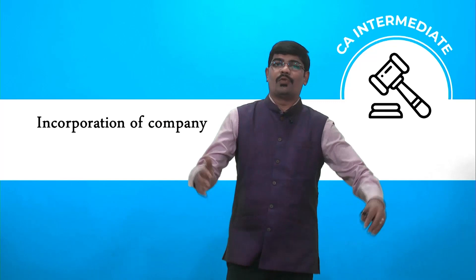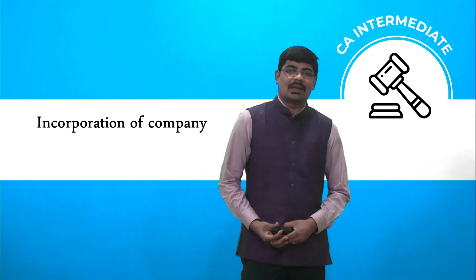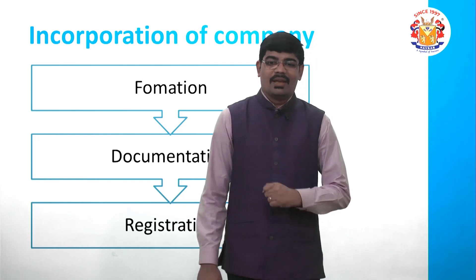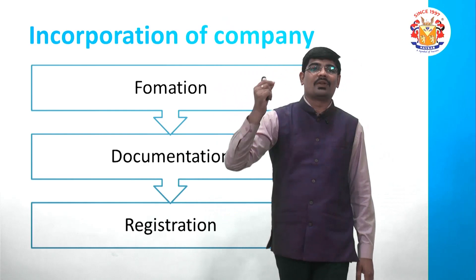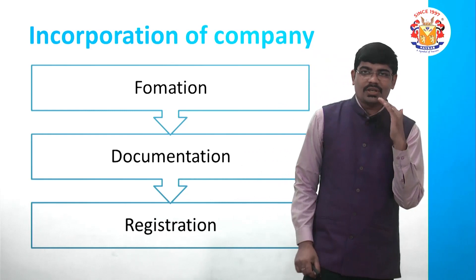When you want to incorporate any company, follow the steps given in the Act. For better understanding, I have bifurcated the steps into three parts: the first part is Formation, the second part is Documentation, and the third stage is where you apply to ROC — the Registrar of Companies — for the registration process. If ROC gives a certificate of incorporation, the company is incorporated.